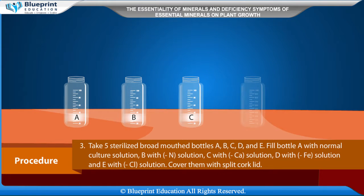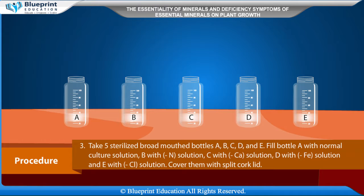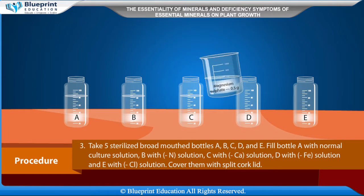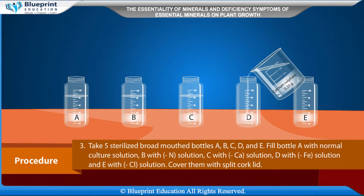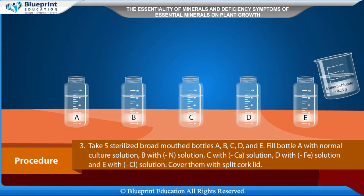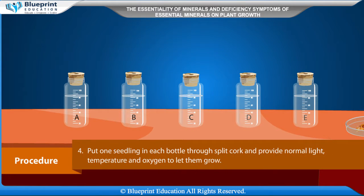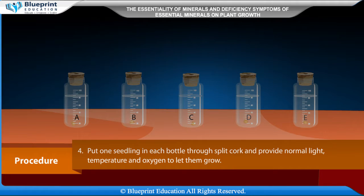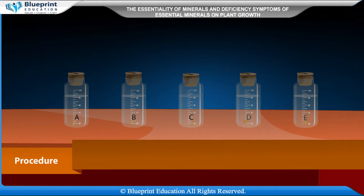Take 5 sterilized broad-mouthed bottles A, B, C, D, and E. Fill bottle A with normal culture solution, B with negative-N solution, C with negative-Ca solution, D with negative-Fe solution, and E with negative-Cl solution. Cover them with a split cork lid. Put one seedling in each bottle through the split cork and provide normal light, temperature, and oxygen to let them grow. Record your observations after every 2 days.